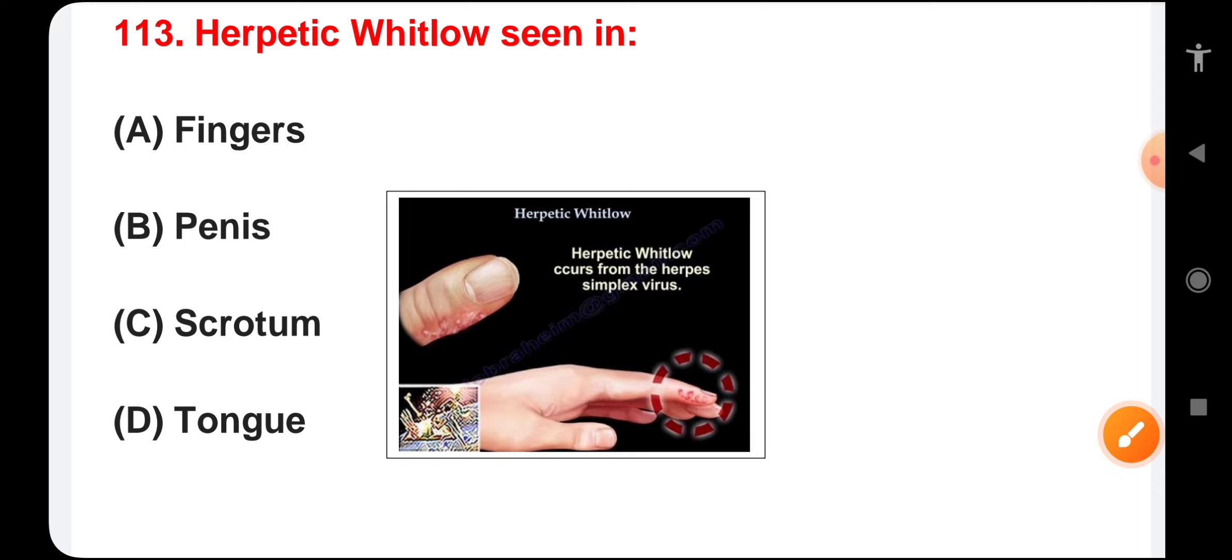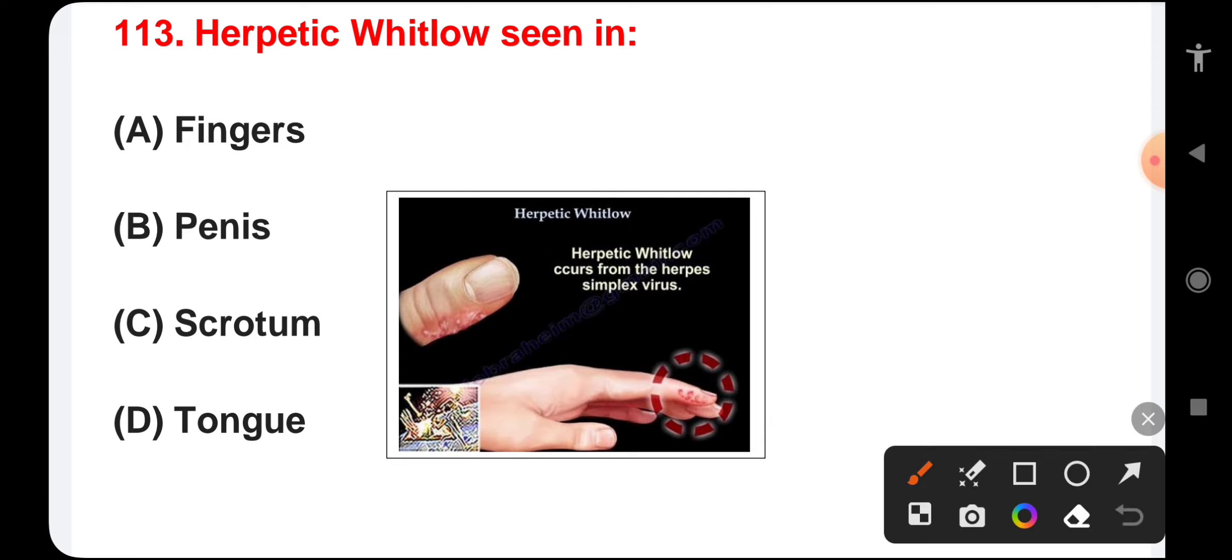Herpetic whitlow seen in fingers, penis, scrotum, or tongue. Herpatic whitlow occurs from the herpes simplex virus and is seen in the fingers.